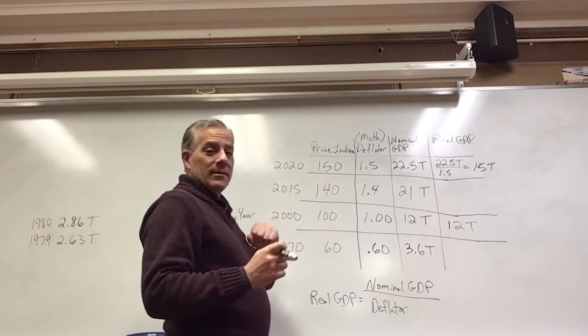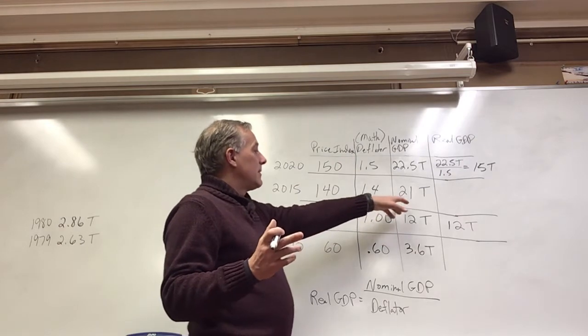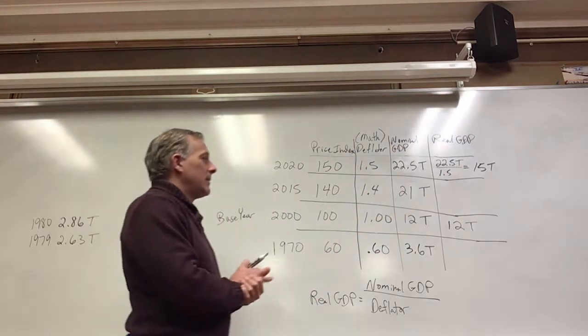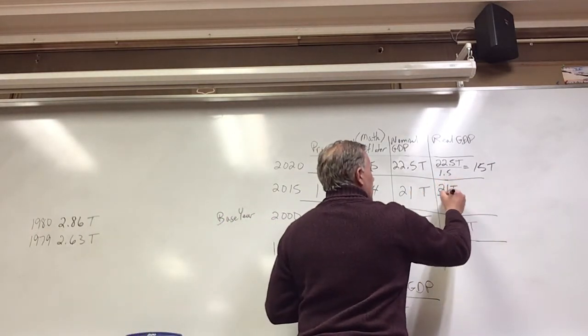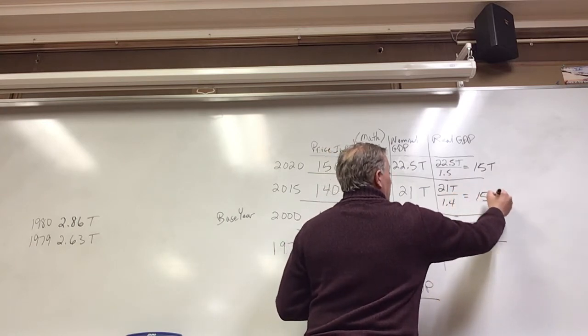The price index is lower, things cost less, and the nominal GDP is lower. But if we do 21 divided by 1.4, we get also 15 trillion.